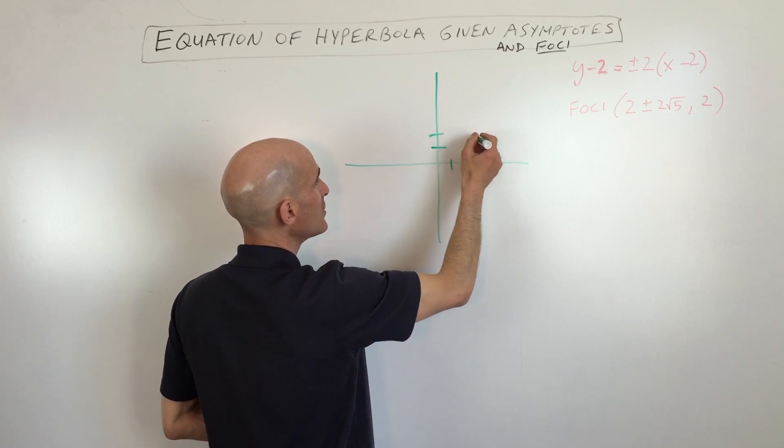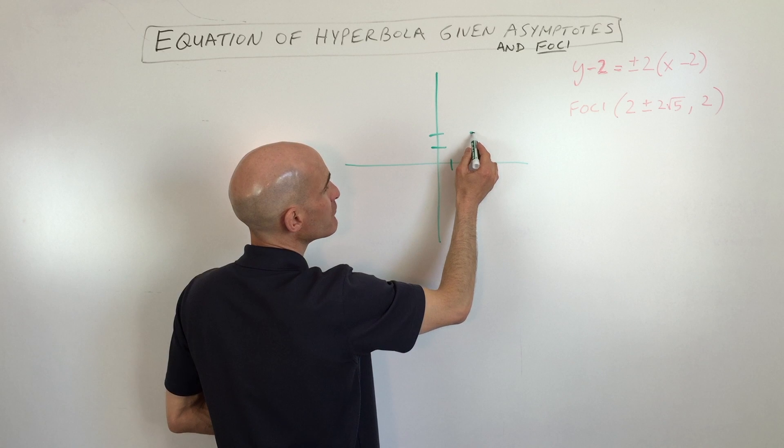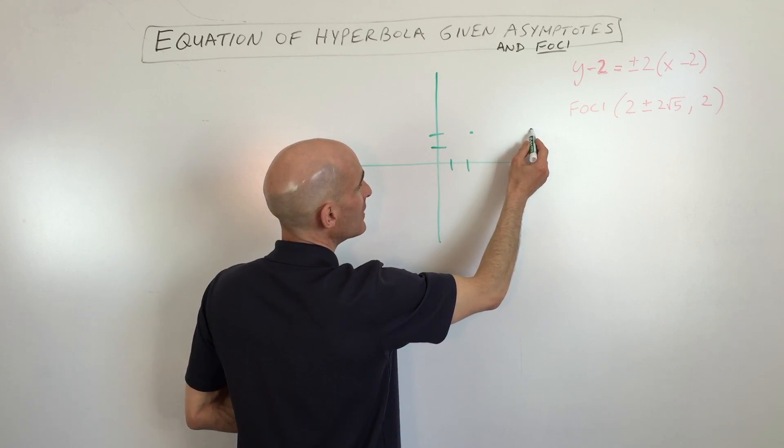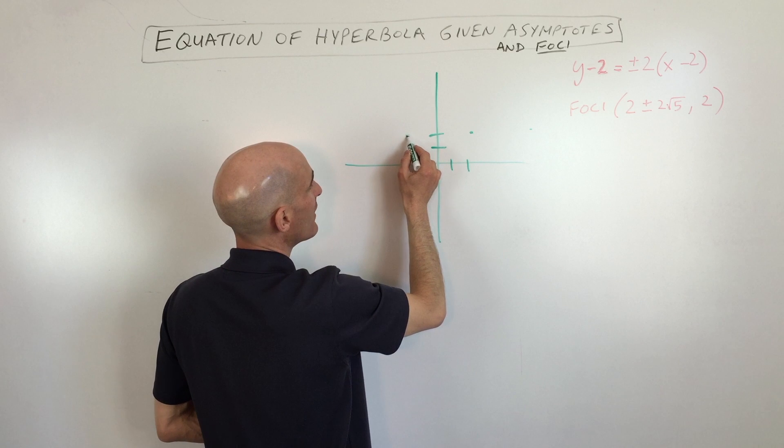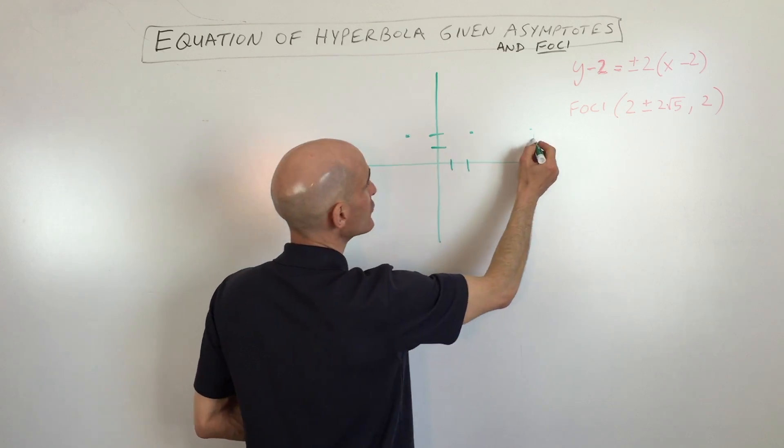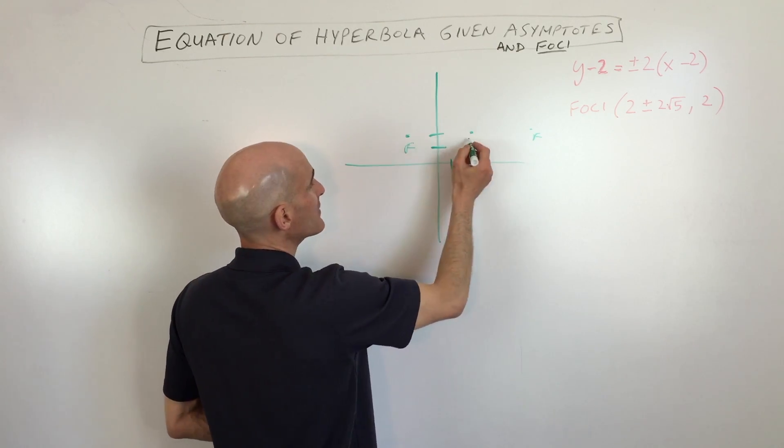So we know we're going to be going up 2 here, that's the y value. But then we're going to be going 2 root 5 to the right, and we're going to be going 2 root 5 to the left. Those are the foci, and this is the center.